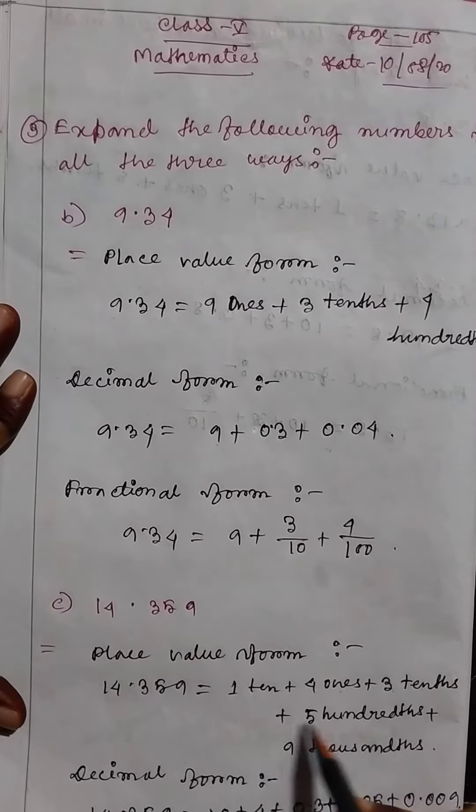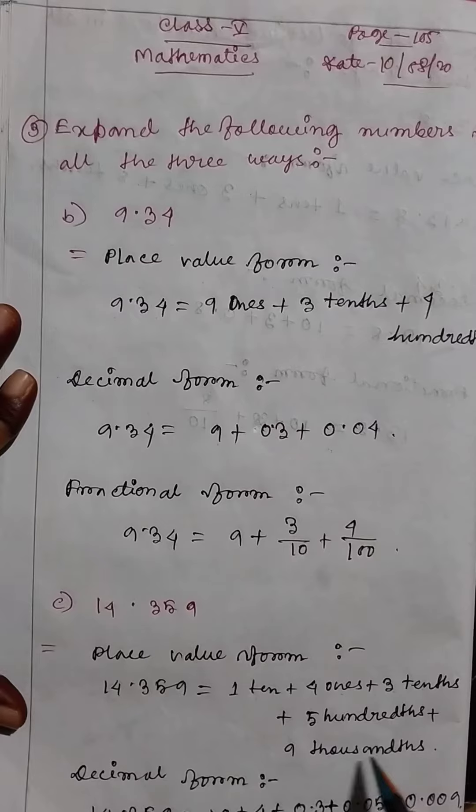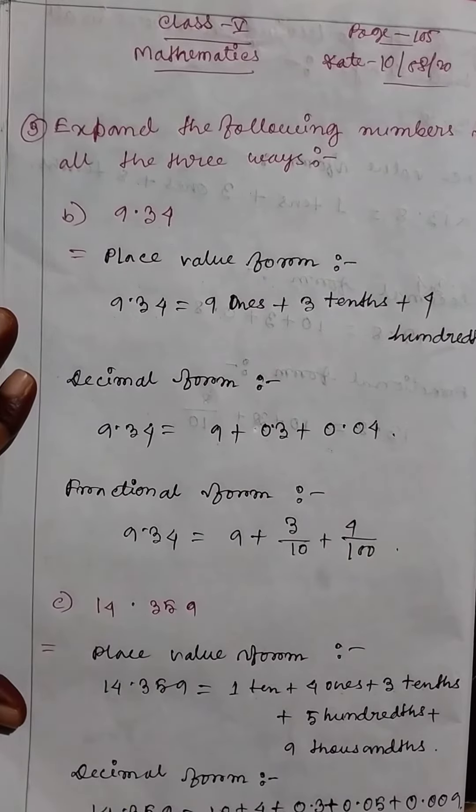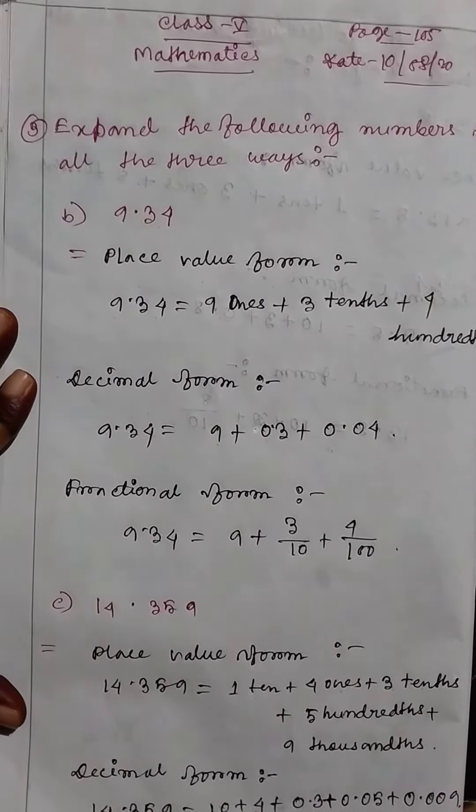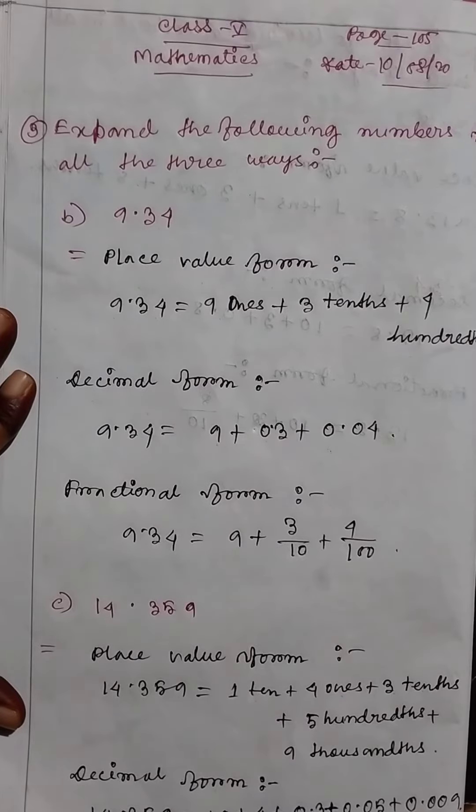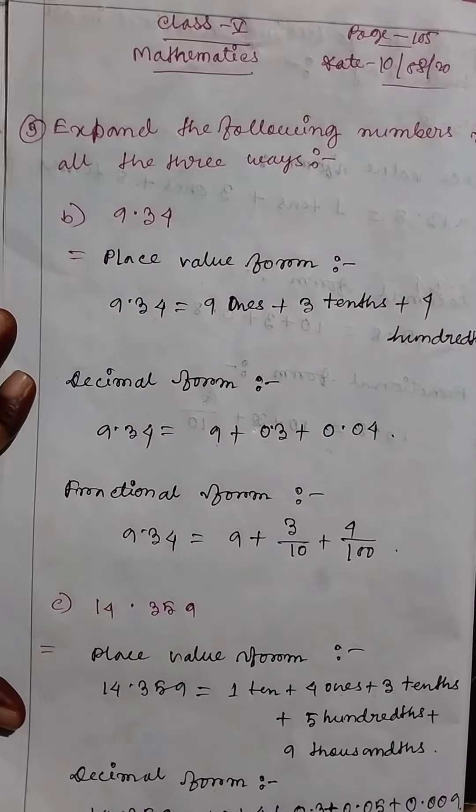Then decimal form: 10 plus 4 plus 0.3 plus 0.05 plus 0.009.